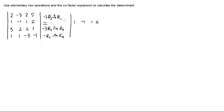Negative one times one times negative two is negative two, so this one becomes zero. Negative two times negative one is two; two plus negative three is negative one. And this one is zero again. Then negative two times two is negative four, and this one becomes one for the first row.